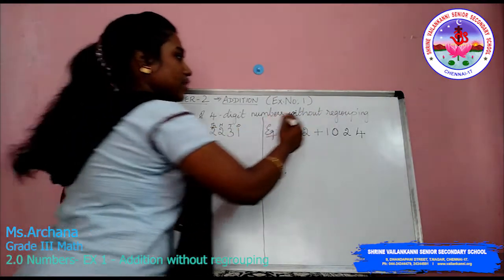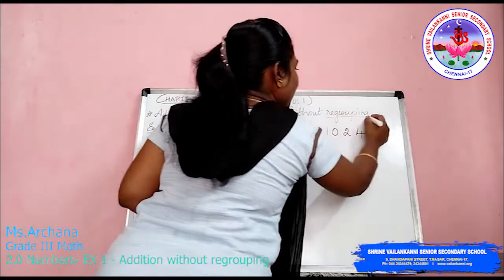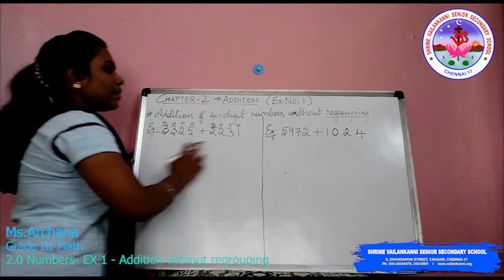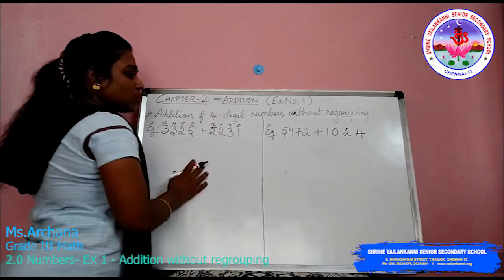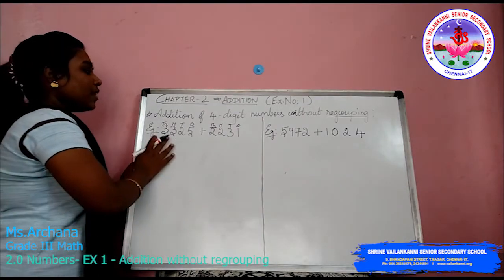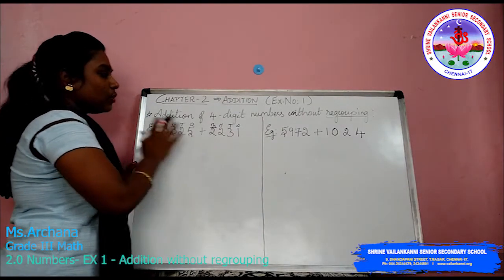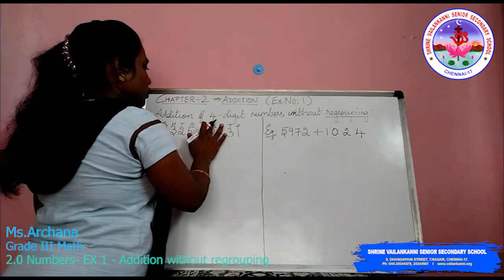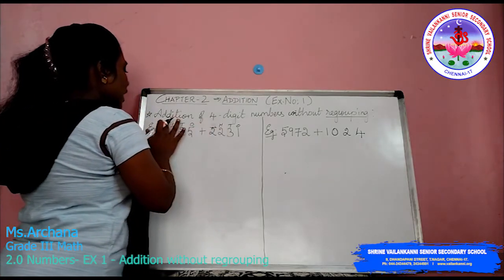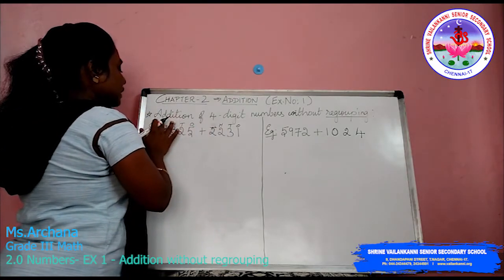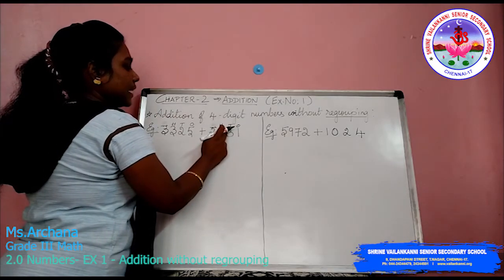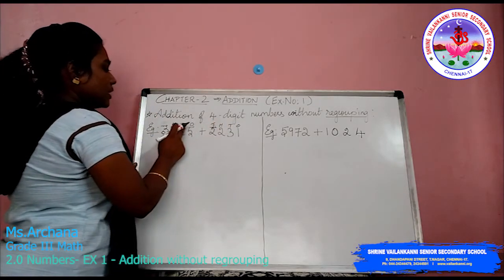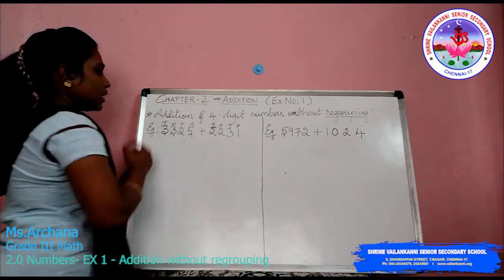I will just tell you what regrouping actually means when doing addition. So for example, I have written here 2 sums and we will see them one by one. Whenever you get the numbers, you are supposed to give the place values. I have written the place values: 1s, 10s, 100s, 1000s.